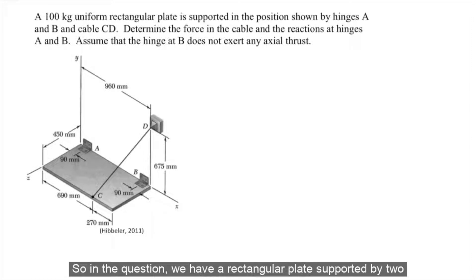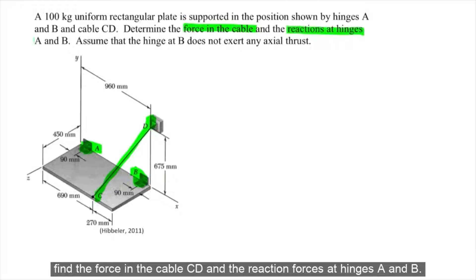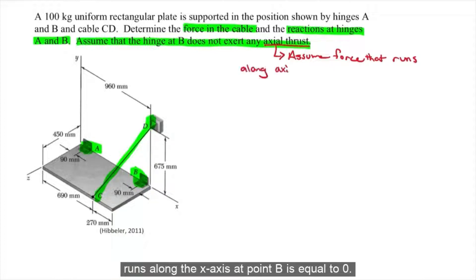In the question we have a rectangular plate supported by two hinges, A and B, as well as a cable connected at C and D. We're told to find the force in the cable CD and the reaction forces at hinges A and B. The question also tells us to assume that the hinge at B does not exert any axial thrust, meaning any force that runs along the x-axis at point B is equal to zero.